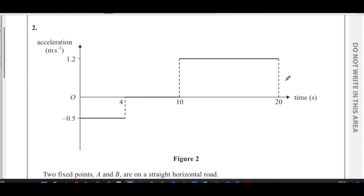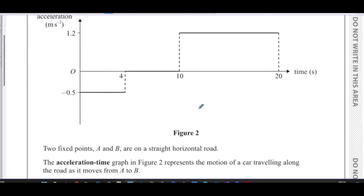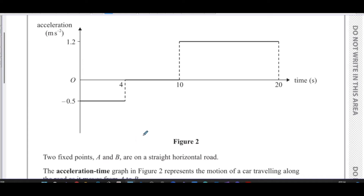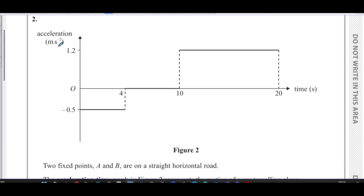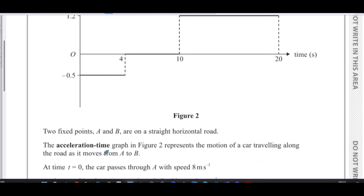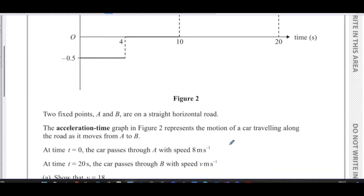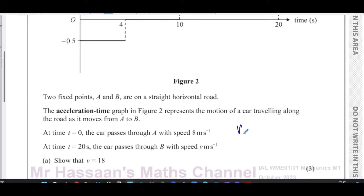Here we have an acceleration-time graph. Two fixed points A and B are on a straight horizontal road. The acceleration-time graph in figure two represents the motion of a car traveling along that road as it moves from A to B. At time t=0, the car passes through A with speed 8 m/s. At time t=20, the car passes through point B with speed v m/s, and we need to show that v equals 18.